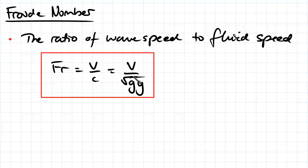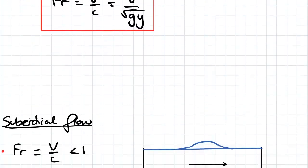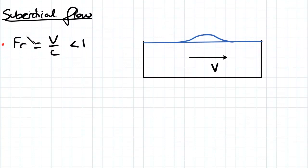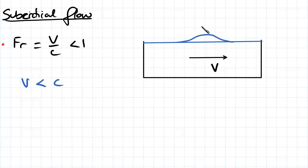Looking at different values of Froude number, we've got three types of flows. The first is called subcritical flow, and this occurs when Froude number is less than one. That means the velocity of our fluid is less than our wave speed. What that means is that if we have a disturbance in our fluid, the disturbance is actually going to move in all directions.